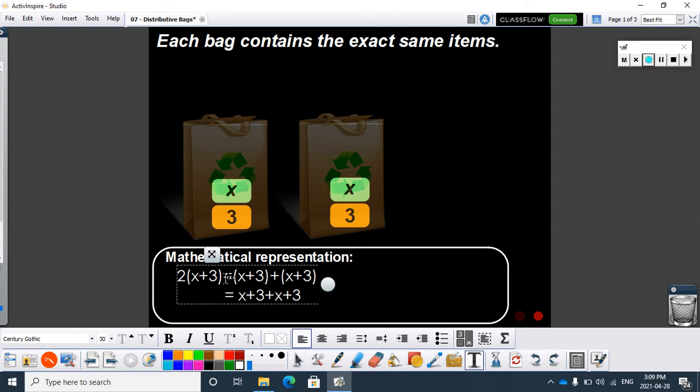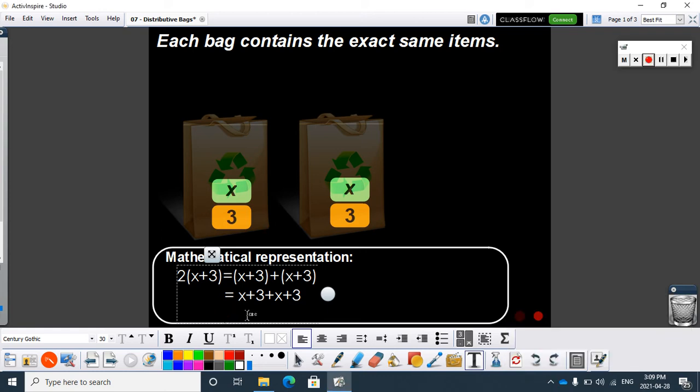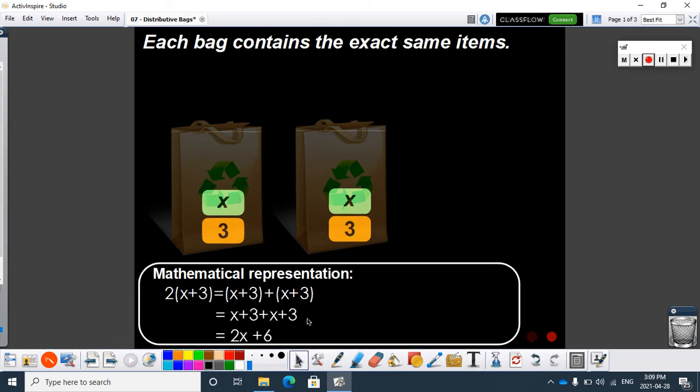I'm just going to collect like terms there. I see an x over here and another x over there, so I can add those together and get 2x. There's my 2x, and then I get a 3 and another 3, and those add up to 6.